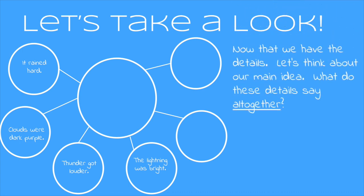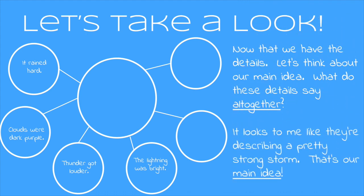Now we have to think about the main idea. What do these details say all together? It rained hard, clouds were dark purple, thunder got louder, the lightning was bright. It looks to me like they're describing a pretty strong storm. That's our main idea.